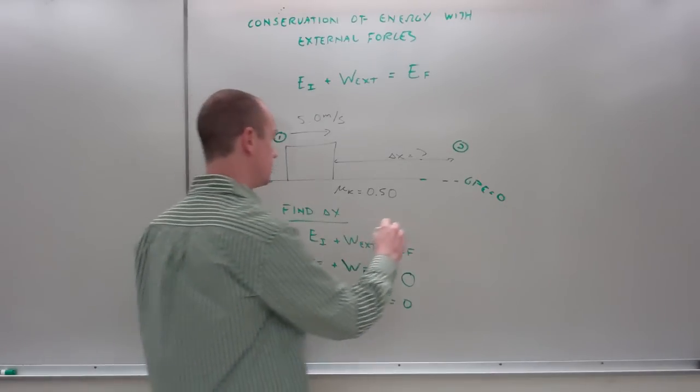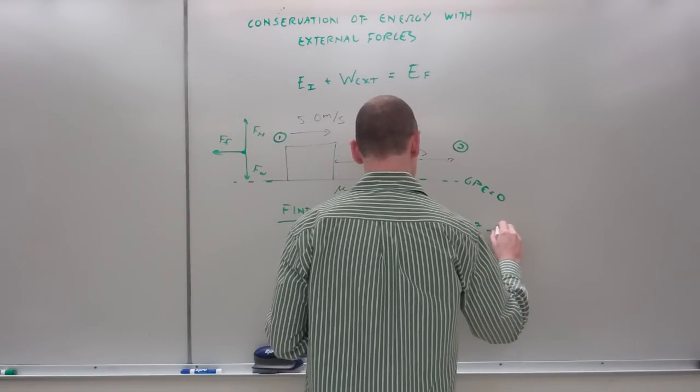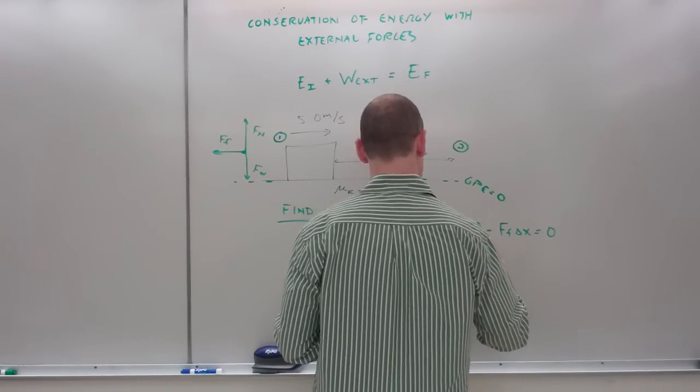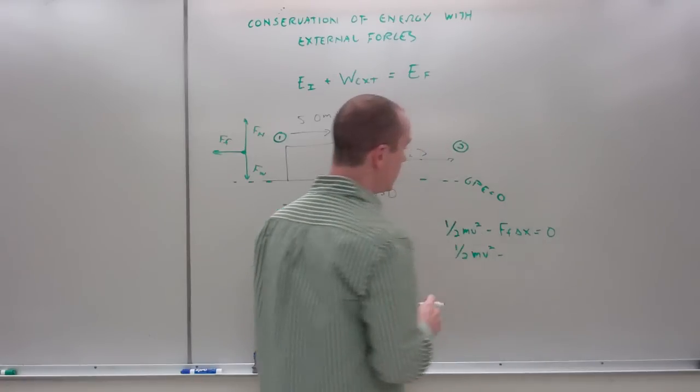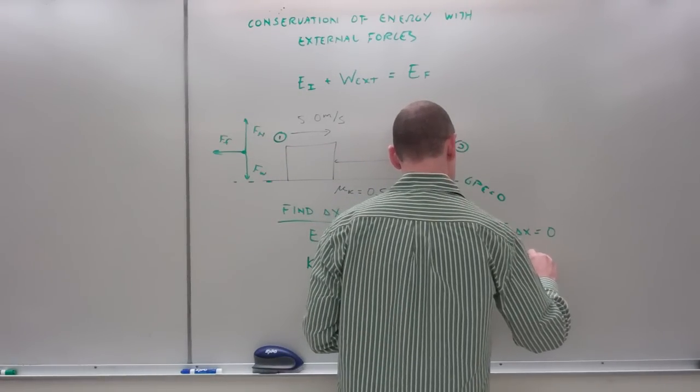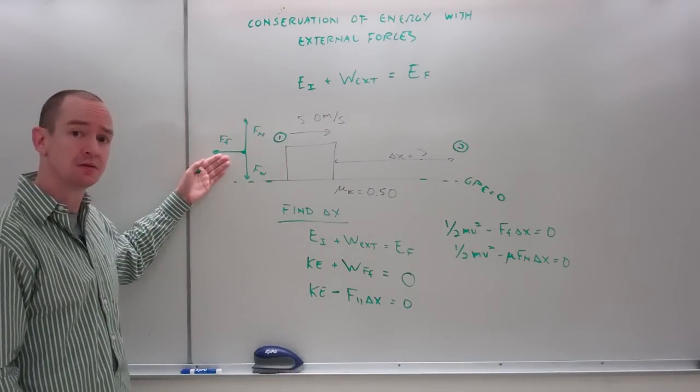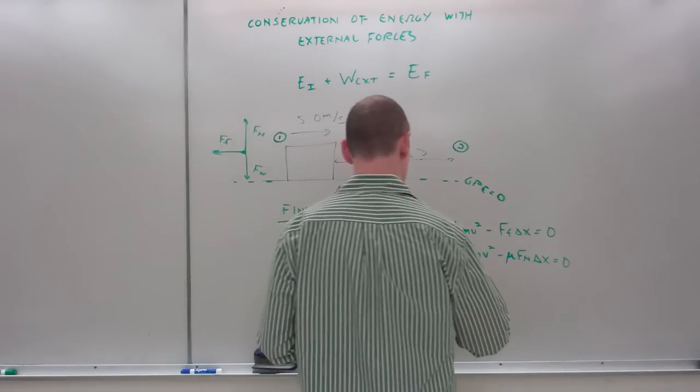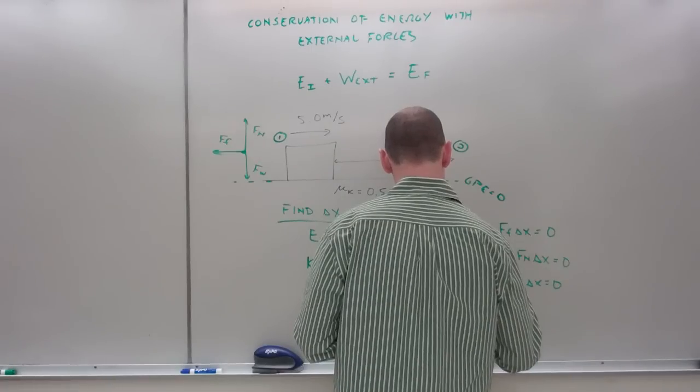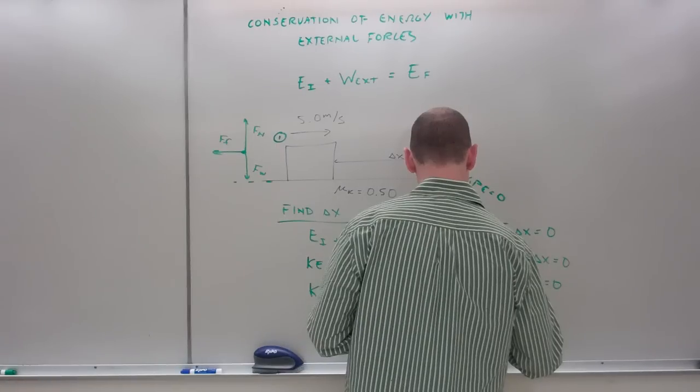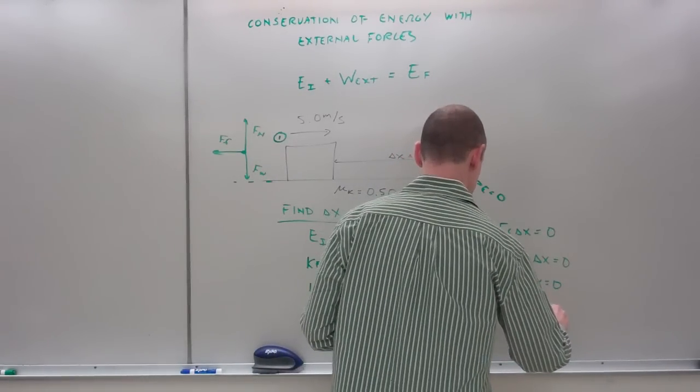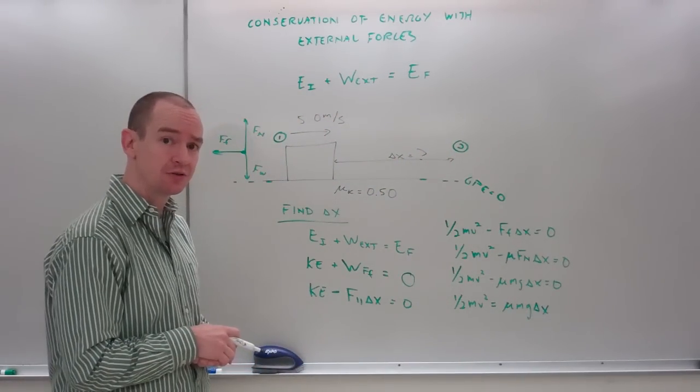Okay, I can solve this. Recall, friction is mu Fn. Fn here is going to be mg. My masses are going to cancel out, and I can plug in all of my numbers.